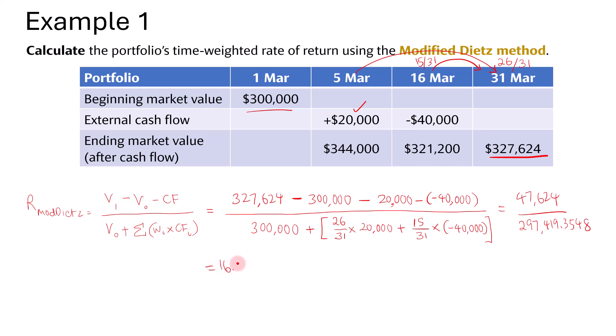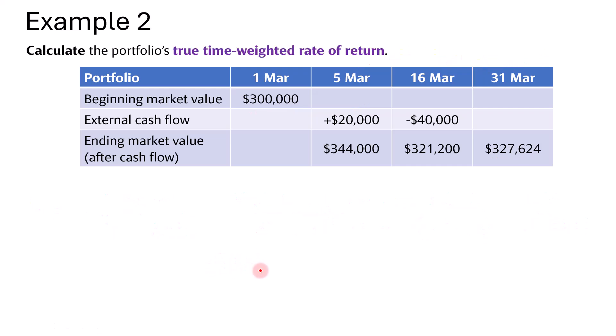Now on to example two. To calculate the portfolio's true time-weighted rate of return, we need to calculate the sub-period return every time there is an external cash flow. We will calculate the return from 1st March to 5th March, because there is an external cash flow on the 5th of March, and the ending market value of $344,000 is after the cash flow, so we must adjust for all these external cash flows.